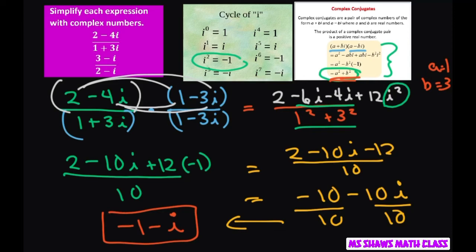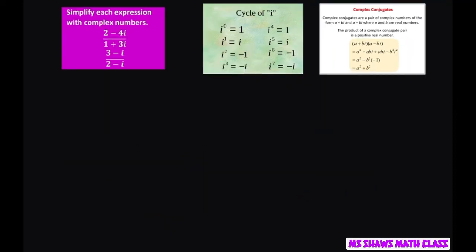Now, you can try the next one on your own. Pause the video and try it, that would be good. I will get started on it, so we're going to do the same thing. 3 minus i divided by 2 minus i, multiply the denominator by the conjugate, which is going to be in this case 2 plus i. Whatever you multiply the denominator by, you also have to multiply the numerator by.